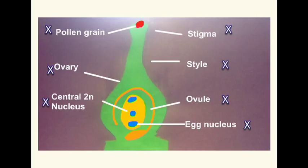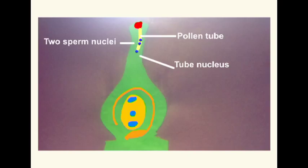The haploid gamete doesn't have enough chromosomes. One of the first things to happen after pollination is mitosis to produce two gametes. A tube nucleus is also produced, which enables a pollen tube to be made all the way to the ovule.